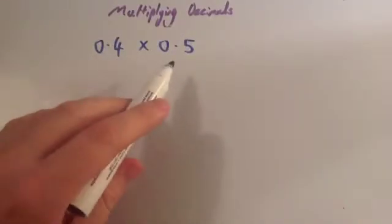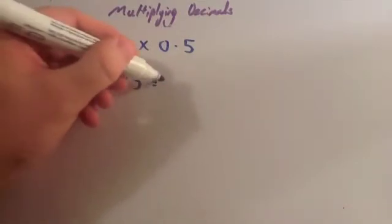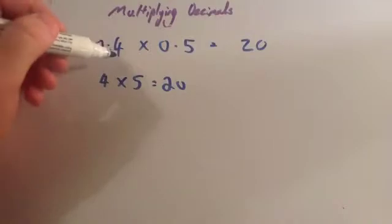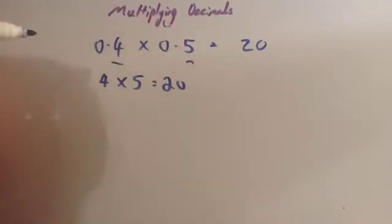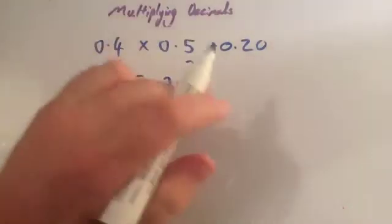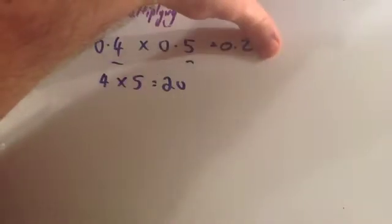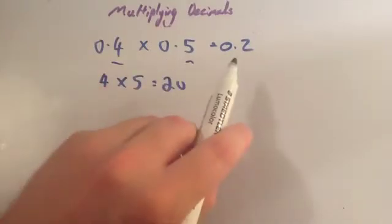Now we're going to look at 0.4 multiplied by 0.5. Again, ignore the decimal points, so you get 4 times 5. 4 times 5 is 20. Now let's look at the question — we had 1 and 2 digits after the decimal point, so 2 digits total. That means in the answer, 2 digits need to be after the decimal point. We put the decimal point in front to get 0.20. That gives us 2 digits after the decimal point. Remember, if you've got zeros on the end of a decimal number you can just get rid of those, so that can be considered as 0.2. So 0.4 times 0.5 is 0.2.